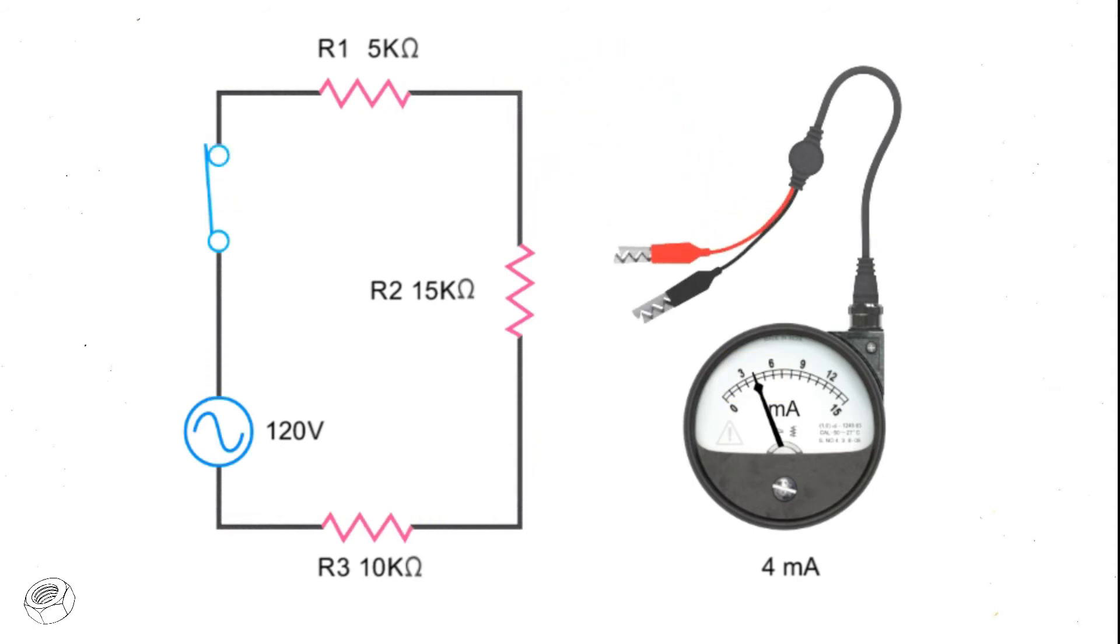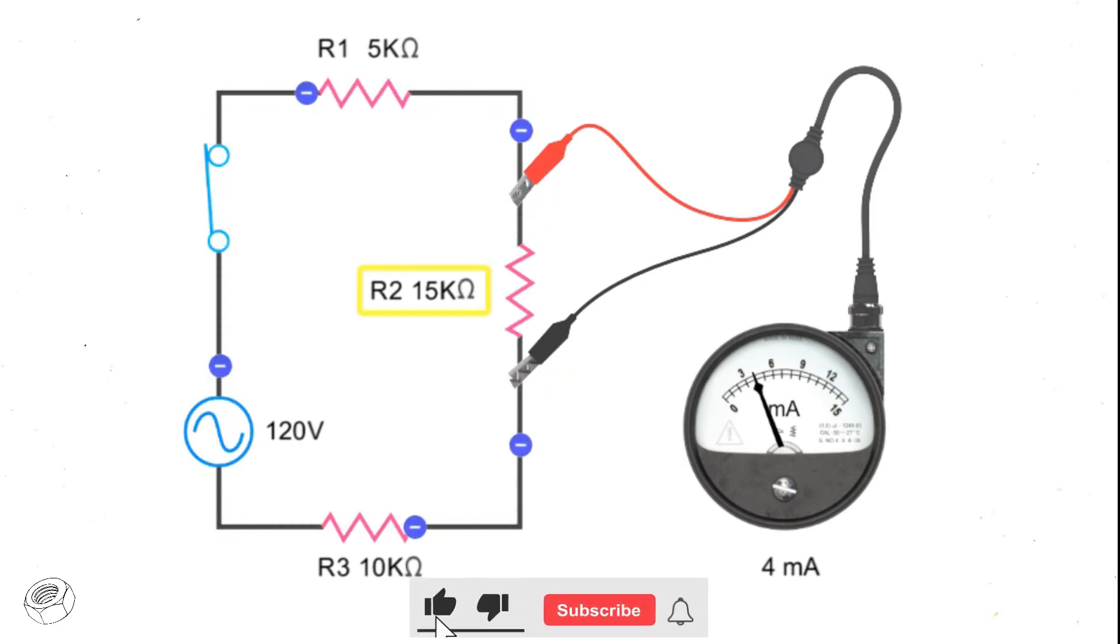Never connect an ammeter in parallel with a component. Because of the very low resistance of the ammeter, the current from the circuit will bypass the resistor and move through the meter. If the current level is high and there are no other current limiting components in the circuit, the high current flow can damage the meter.